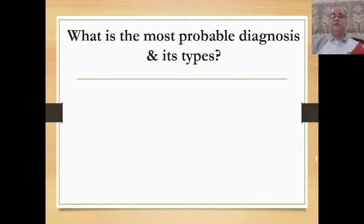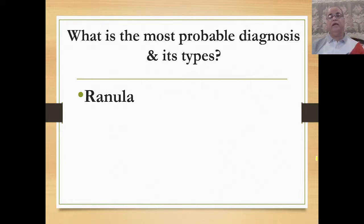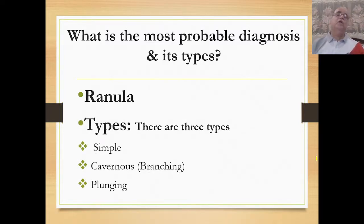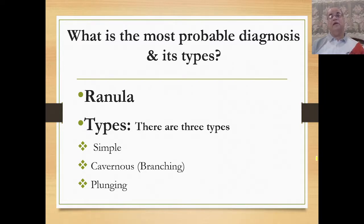The most probable diagnosis is ranula — a cystic, soft, slowly progressing, painless swelling with no constitutional symptoms, away from the midline at the floor of the mouth. There are three types: simple ranula, confined to the floor of the mouth and related to the sublingual gland; cavernous or branching type, with finger-like projections or ramifications; and plunging type, which presents in the neck (submental or submandibular region) with an intraoral swelling simultaneously.